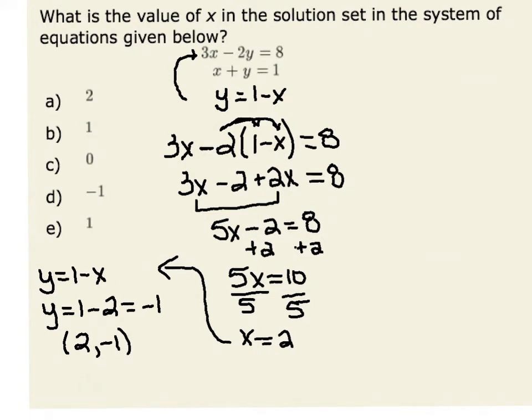Let's first verify this before we select our answer. Since 2, negative 1 is a solution to our system of equations, it should satisfy both equations simultaneously.